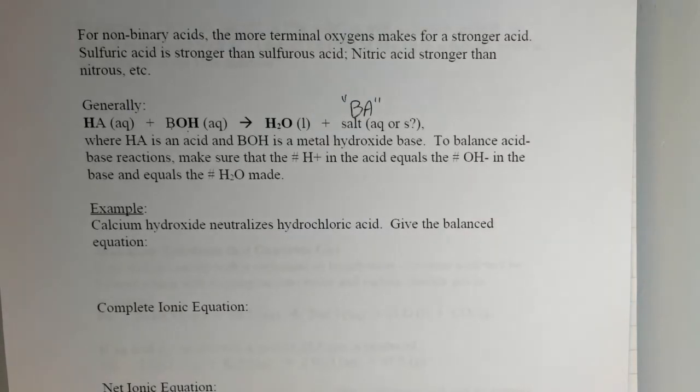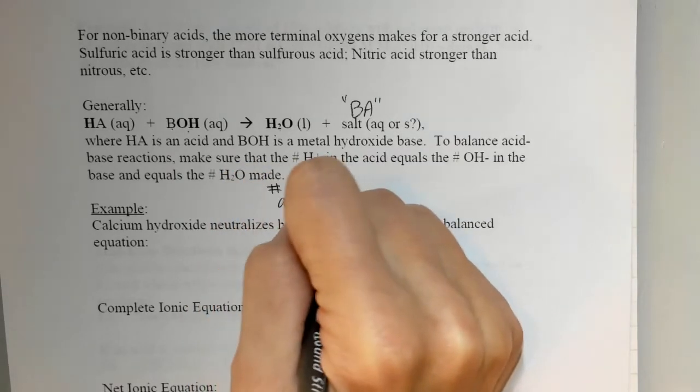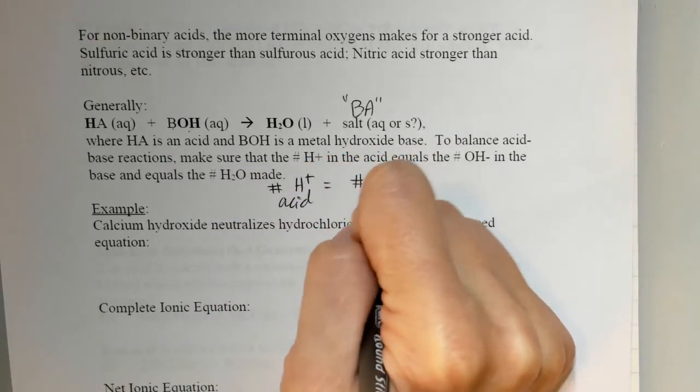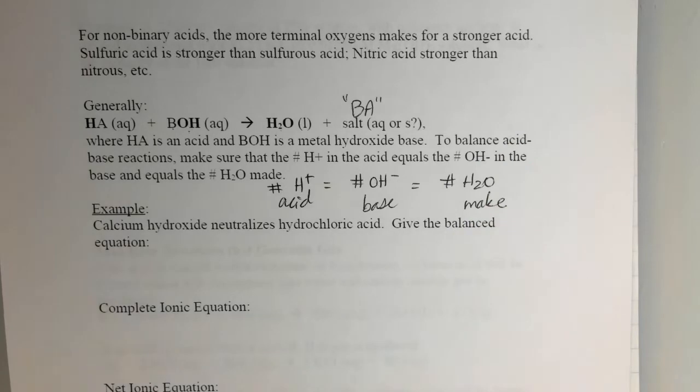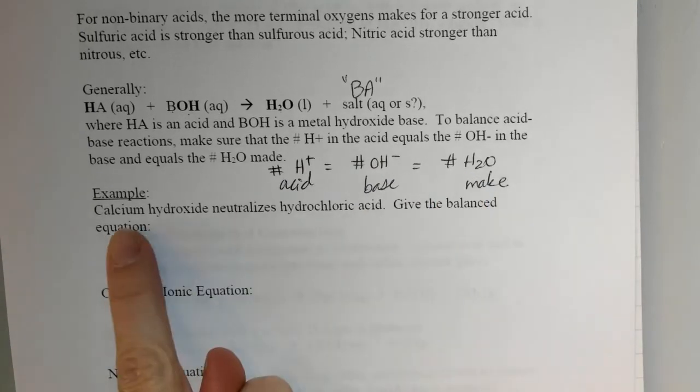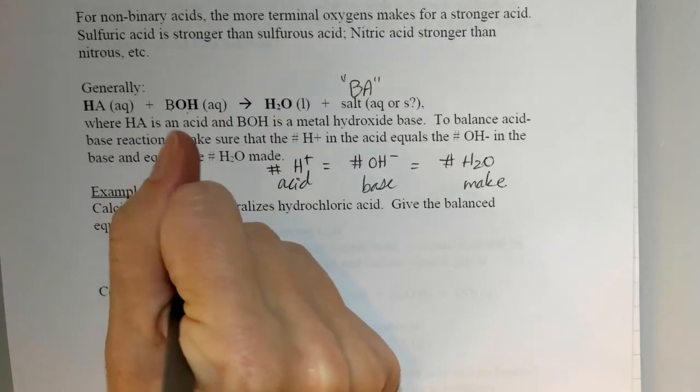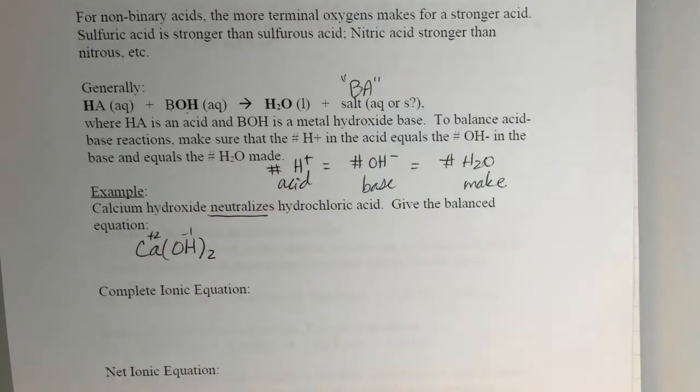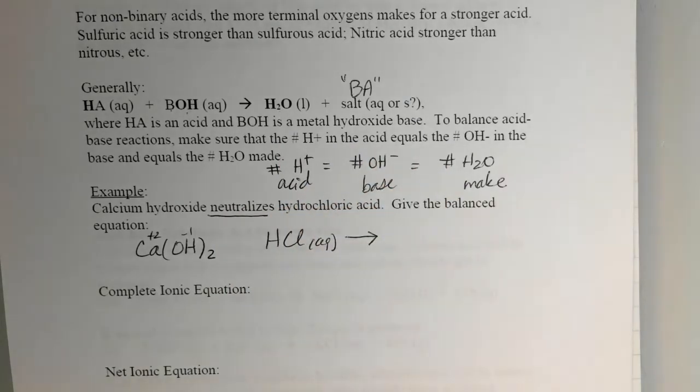Now acid-base reactions, we can balance these just like we did double displacement, but there is a little bit of a shortcut. The number of hydrogens that you have in the acid has to equal the number of hydroxides that you have in the base, and that will equal the number of waters that you make. That is because for every one hydrogen, you need one hydroxide to make one water. So an example here, we've got calcium hydroxide neutralizes hydrochloric acid, and we want to know the balanced equation.